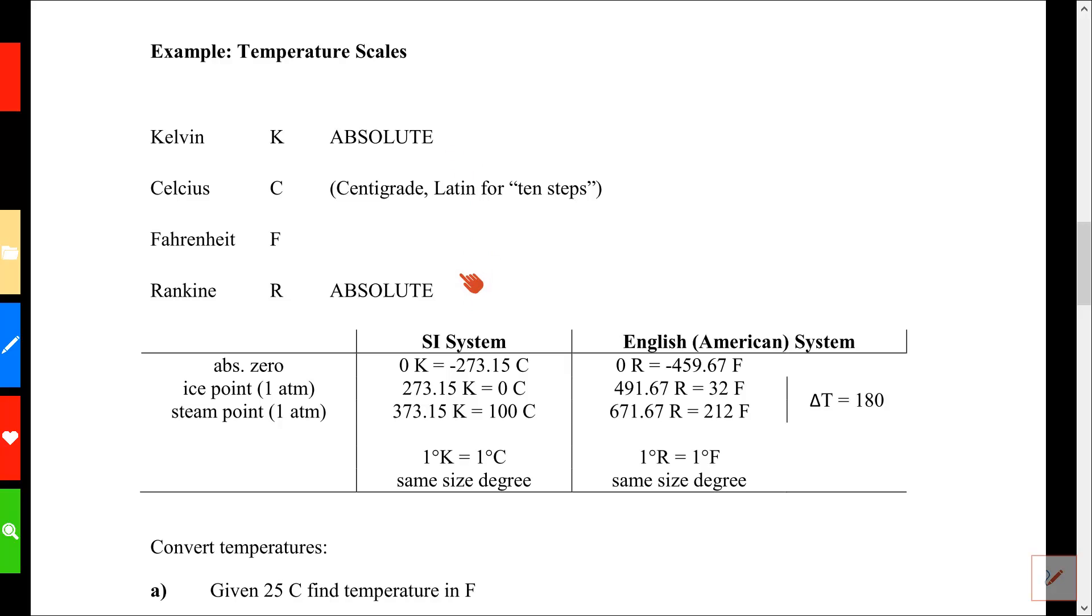So that's one way to keep track of them. Another way is that two of these systems are in the SI system, centigrade and Kelvin, and two are in the English system, Rankine and Fahrenheit.